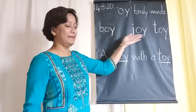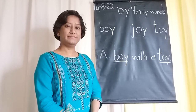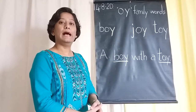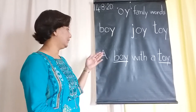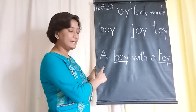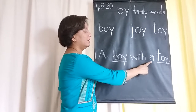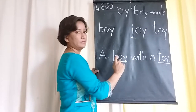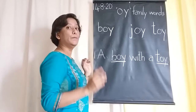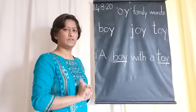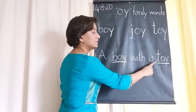Now using these blends, we can make a sentence. Do you want to try? I'll read it for you first and then we can read it together. The sentence says: A boy with a toy. A boy is having a toy — he is having one toy with him. A boy with a toy.